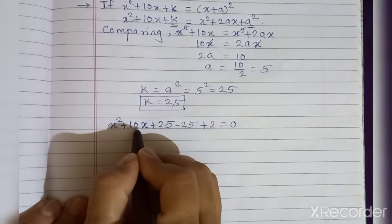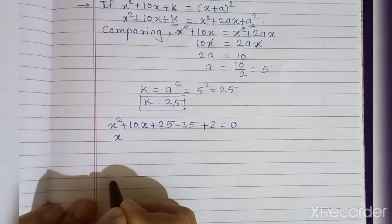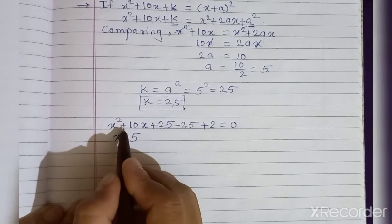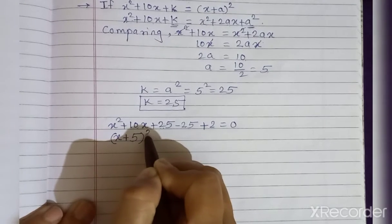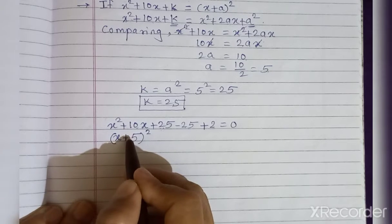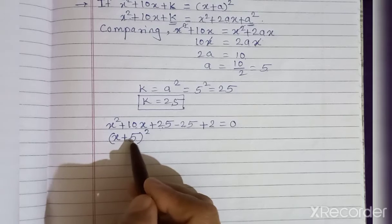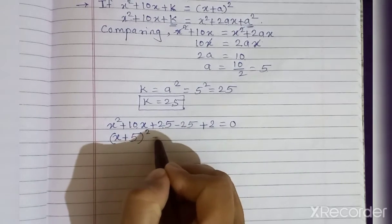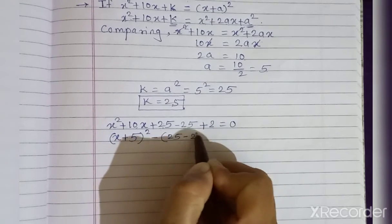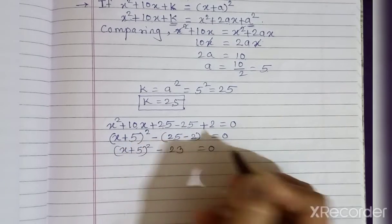Here x² + 10x + 25 forms a perfect square. x² is the square of x, and 25 is the square of 5. The middle term sign is plus, so we write (x + 5)² = x² + 10x + 25. Taking minus common from the remaining two terms, we get minus (25 + 2) = minus 23. So (x + 5)² - 23 = 0.